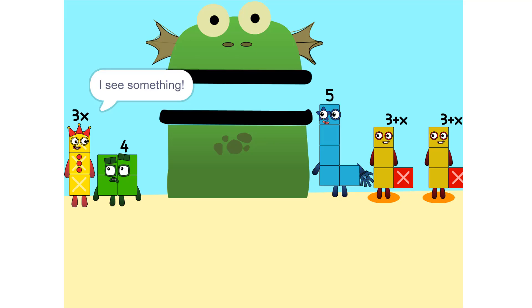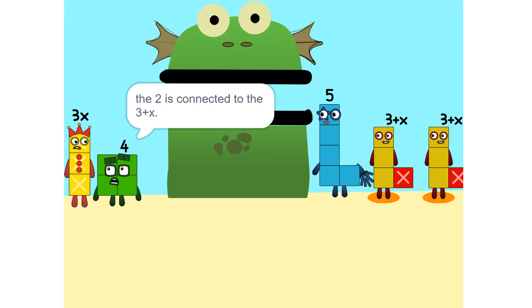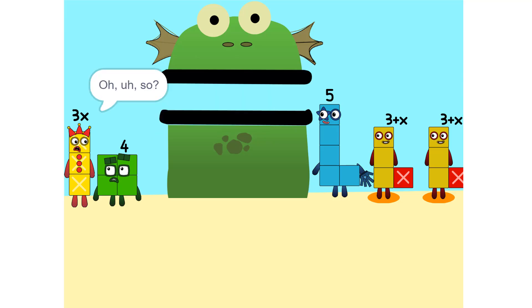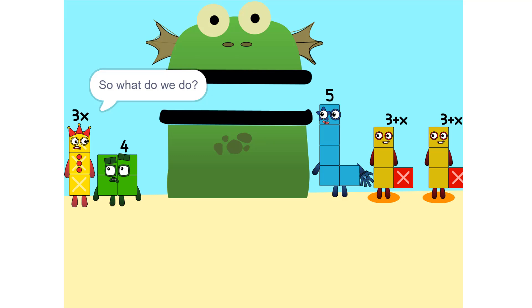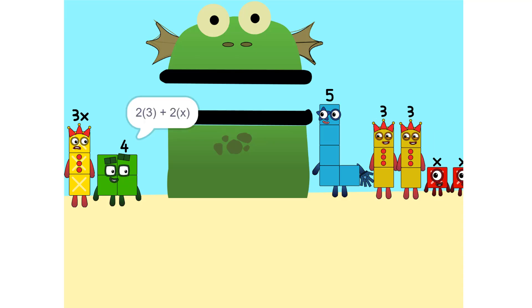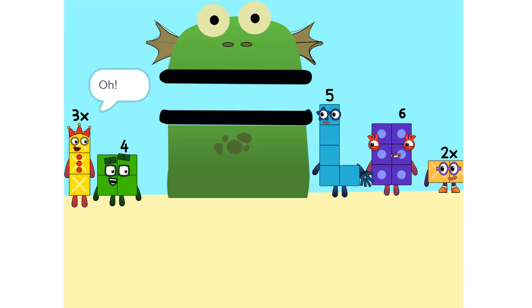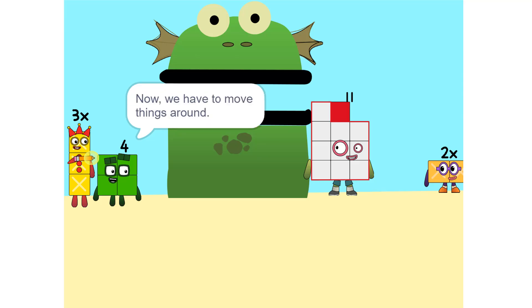I see something. We can add these. Why did that happen? Because the 2 is connected to the 3 plus X. Oh, I saw. It's like adding apples and oranges. You can't. So what do we do? Okay, see the 2 times 3 plus X? That's the same as 2 times 3 plus 2 times X, which is 6 plus 2X. Oh. And 5 plus 6 is 11.